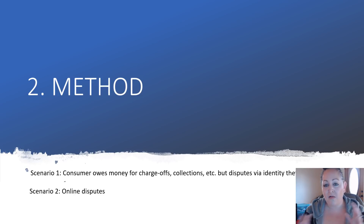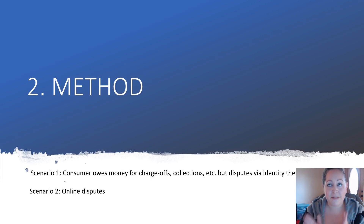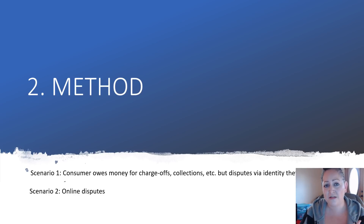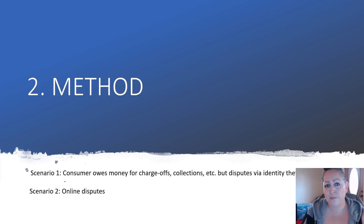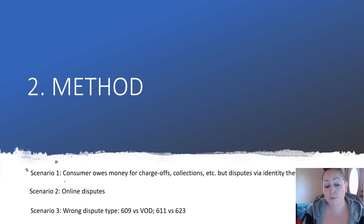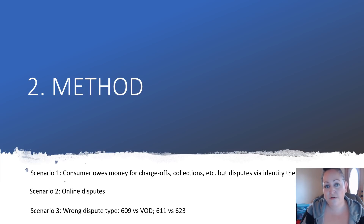Number two is online disputes. What a lot of people don't realize is that you are giving up a lot of your rights under Section 623 when you dispute online. The bureaus don't have to notify you of the investigation results, they don't have to forward anything to the creditors. You have rights, and you're just making it easier for the bureaus to automate everything. Do not do online disputes.